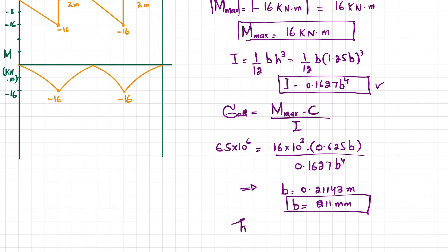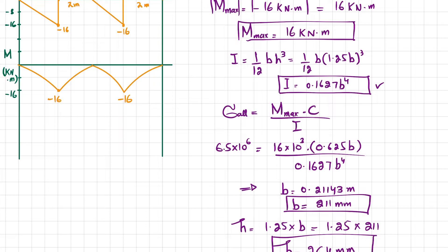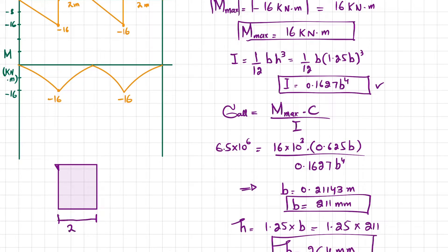Now that we have b, we calculate h using h equals 1.25 times b. So h equals 1.25 times 211 millimeters, giving h equals 264 millimeters. The rectangular beam has width b equals 211 millimeters and height h equals 264 millimeters.